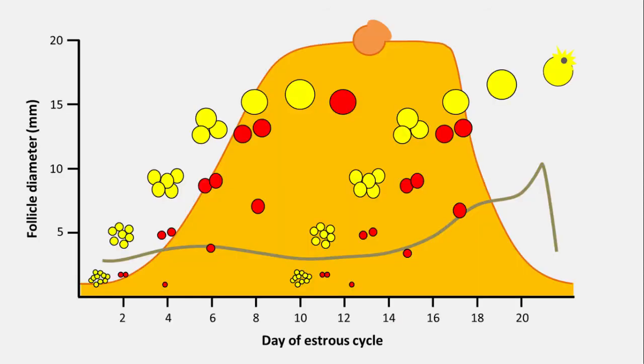Heifers and cows have an estrus cycle that is 21 days in length on average, during which time follicles grow in a wave-like pattern with two or three waves of growth during each cycle. A cohort of healthy follicles, indicated here with yellow circles, grow in size and compete for dominance until most have regressed, indicated in red.